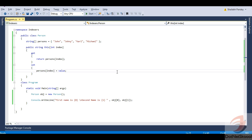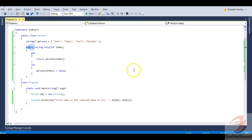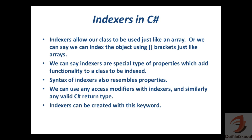Going back to the slides — the syntax of indexes also resembles properties. We had get and set accessors defined in our indexer too. Indexes resemble properties but remember they are created with the 'this' keyword. We can use any access modifiers with indexes such as private or protected, and similarly any valid C# return type for the indexer.